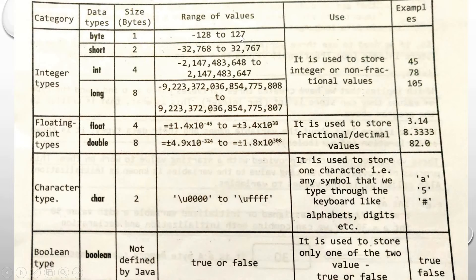If you want to use a small number like 10 or 12, it falls in the range of minus 128 to 127, which is the byte data type occupying only 1 byte. If you use int for such small numbers, 4 bytes would be allocated and space would be wasted. So for optimum utilization of memory space, it is better to declare the appropriate data type.